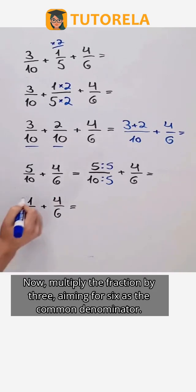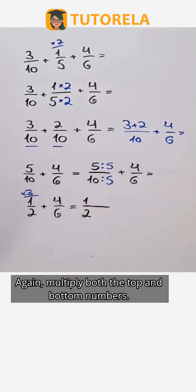Now multiply the fraction by 3, aiming for 6 as the common denominator. Again, multiply both the top and bottom numbers.